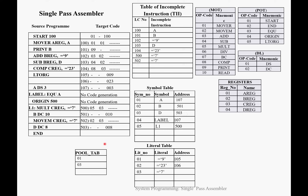Next is the END statement. After END, we assign addresses to remaining literals. Only =7 does not have an address yet. Increment LC to 504, assign address 504 to literal =7, and write 007 in the target code. Now every symbol and every literal has an address.